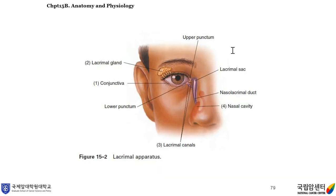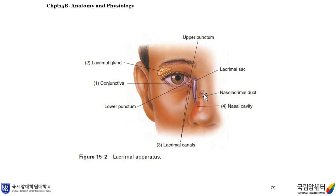This figure shows the lacrimal apparatus. Number one: conjunctiva. Number two: the nasal lacrimal gland. And there are upper punctum and the lower punctum. You can see the lacrimal sac, nasal lacrimal duct, and nasal cavity.